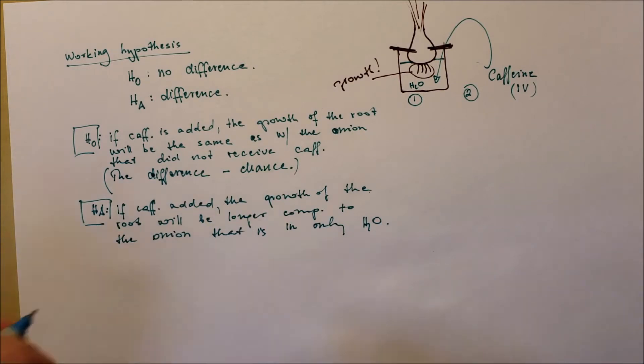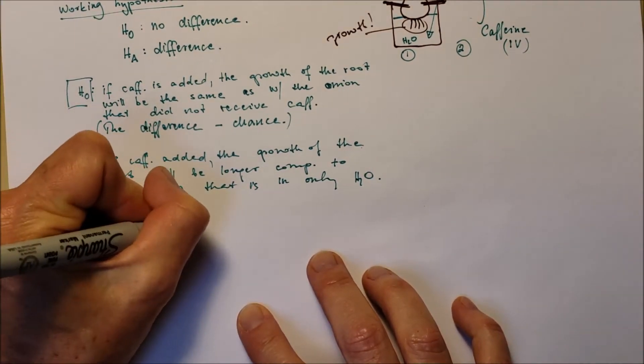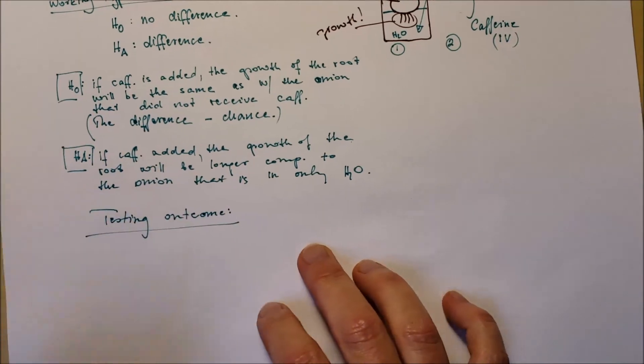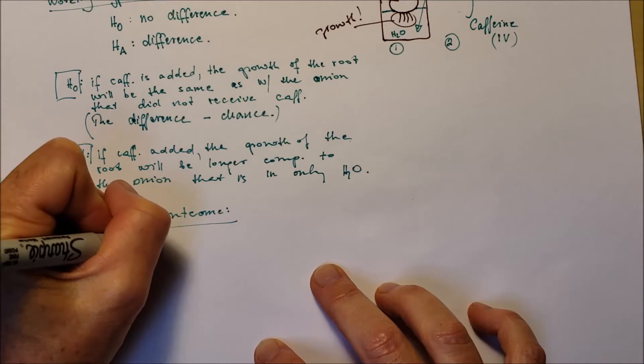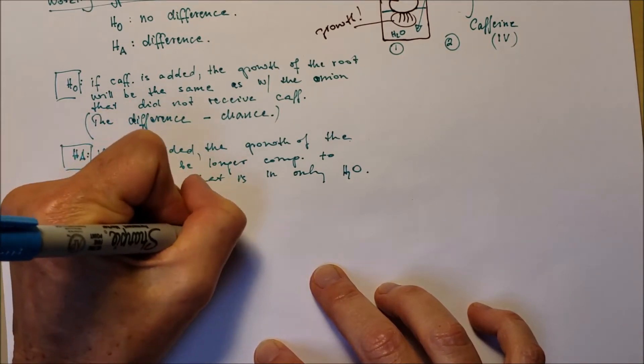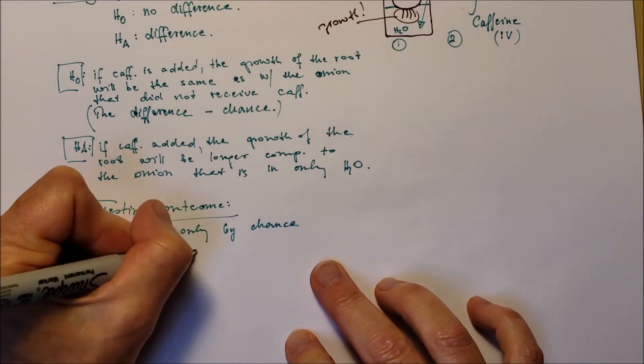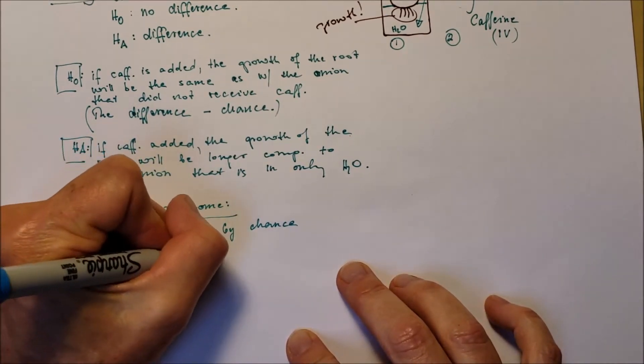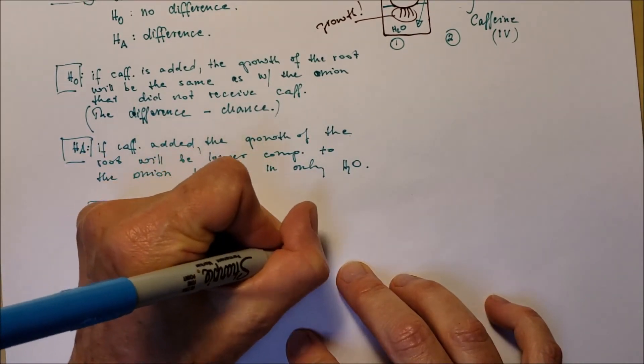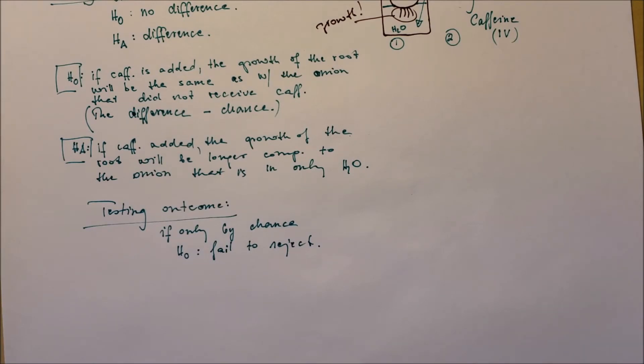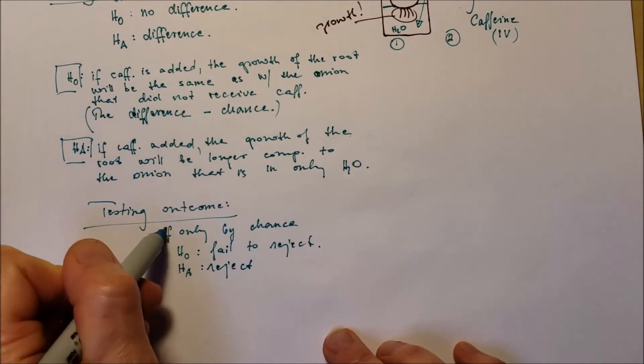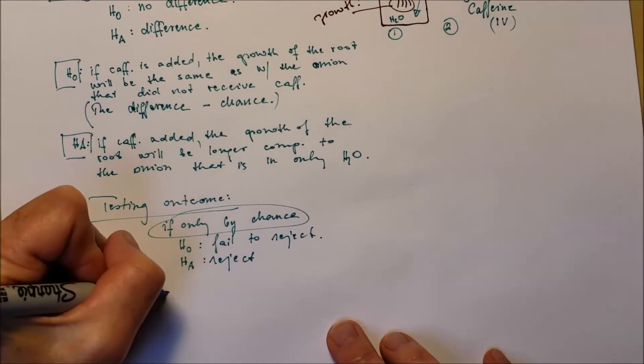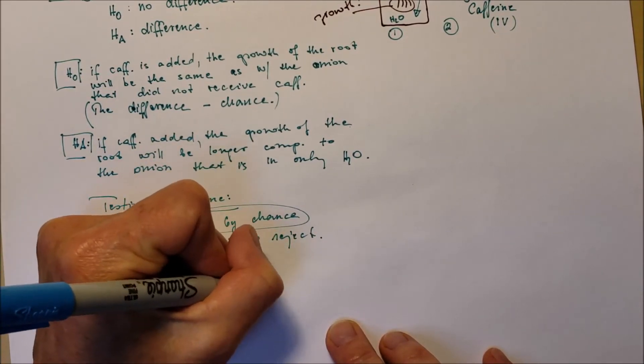Now we will do the statistical testing, the t-test for example, and the testing outcome can happen in two ways. If the group's data difference is due to chance only, so we will say we fail to reject the null hypothesis because there is no correlation between the dependent and independent variables. And as well as the alternative hypothesis is rejected.